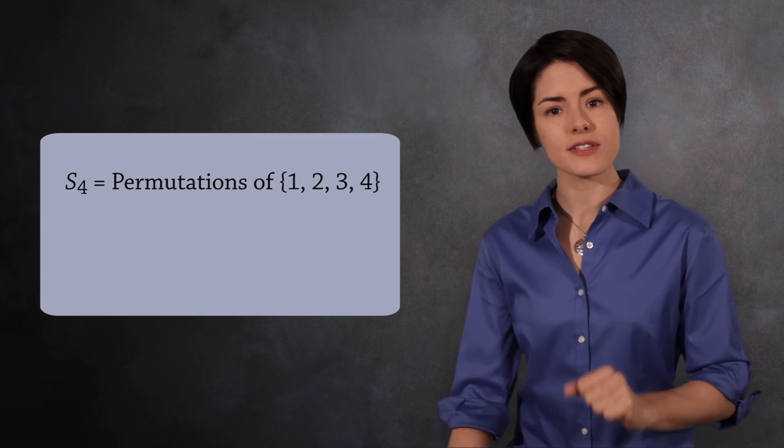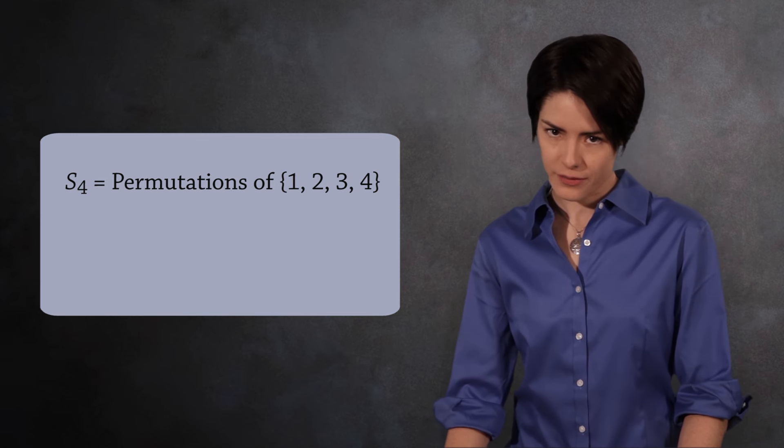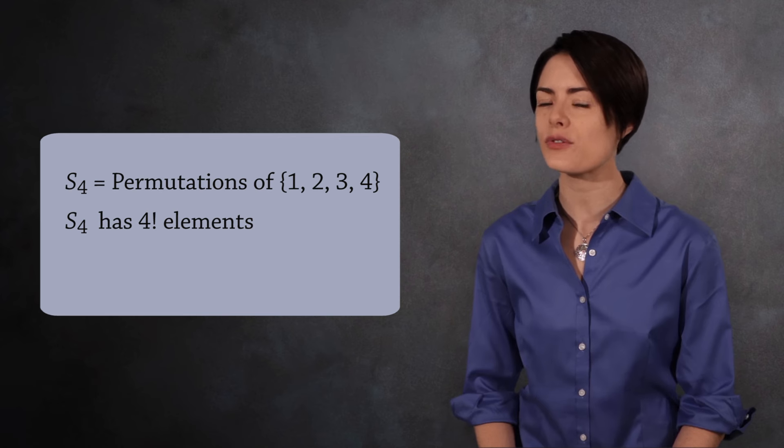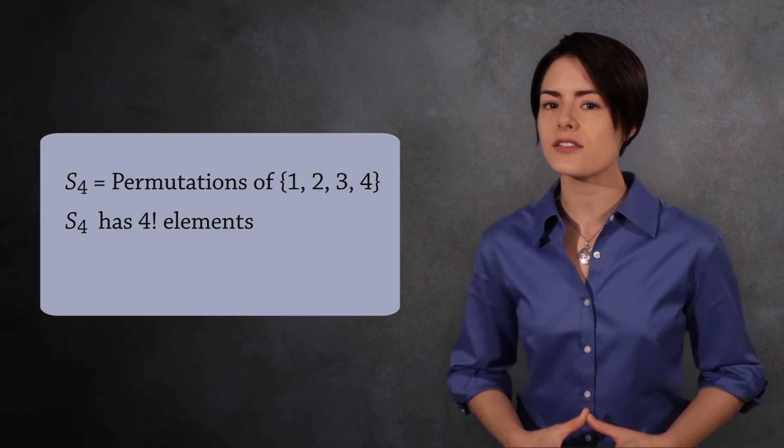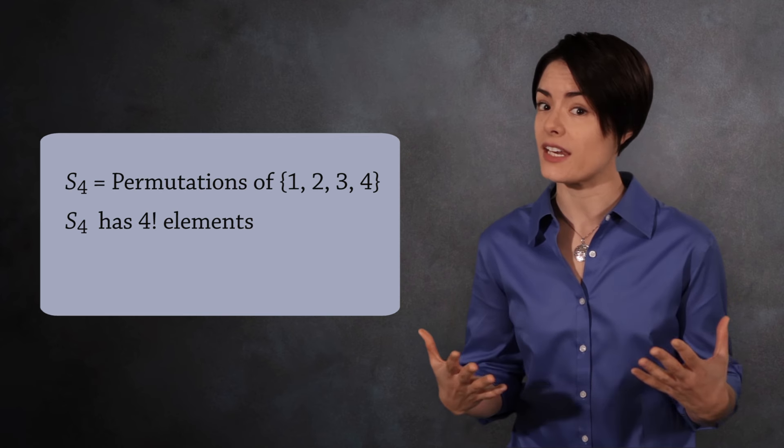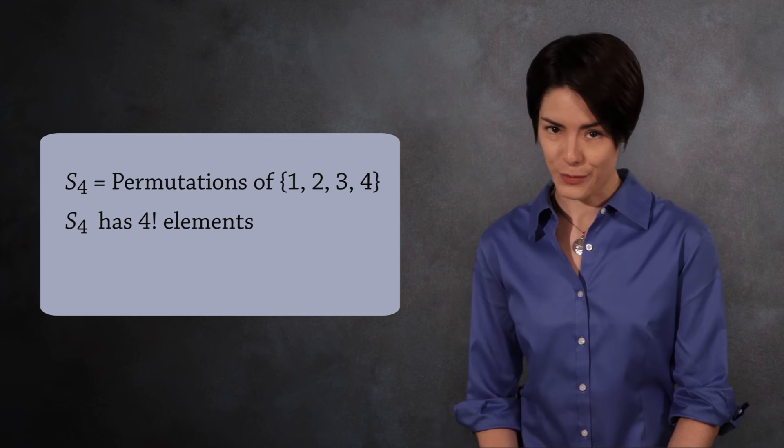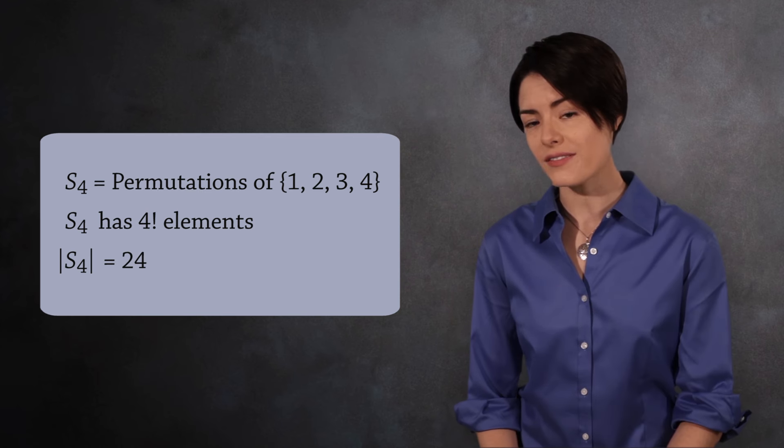S4 is the group of permutations on a set with 4 elements. For simplicity, we'll use the set 1, 2, 3 and 4. This group has 4 factorial elements. The size of a group is also called the order and is written using the absolute value symbol. So the order of S4 is 24.